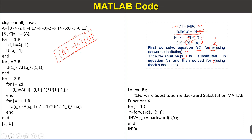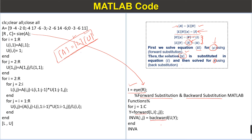Here we have the modified code for finding the inverse after the decomposition. First we create the identity matrix of the same order as the coefficient matrix A. The identity matrix is created using the eye function, where R is the number of rows in matrix A. After this, we apply forward and backward substitution to solve the equations. The forward substitution and backward substitution MATLAB functions are available in the video description for download.